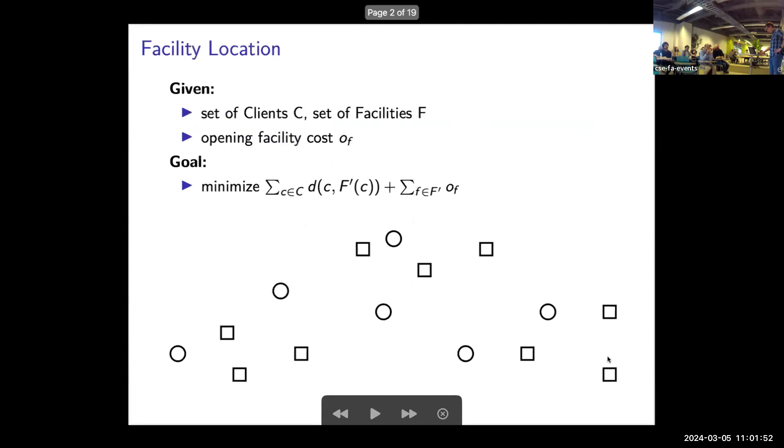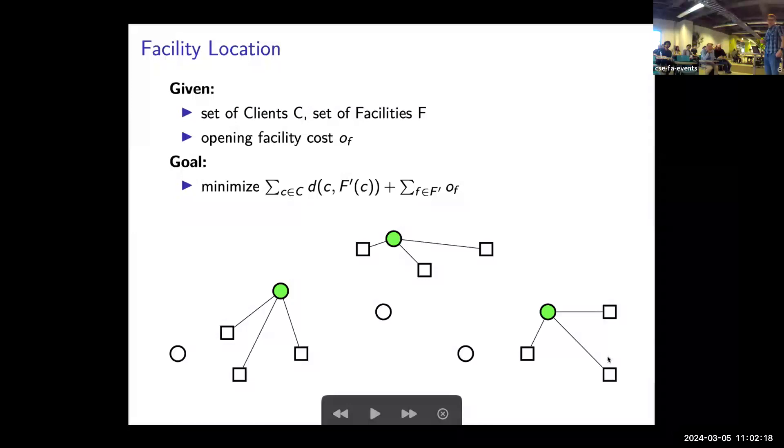So it's one of those classical problems. We start from standard facility location where you have this bipartite graph of clients and facilities. You have to select a subset of facilities and assign clients. In the most standard setting, clients pay the distance to the facility plus this location-specific fee for opening facilities.